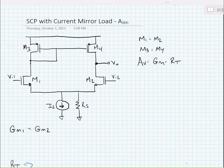Okay, in this video we're going to look at a source coupled pair with a current mirror load. Specifically, we're first going to find the differential mode gain and then we're going to find the common mode gain.